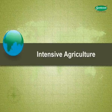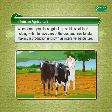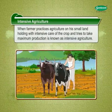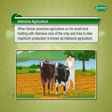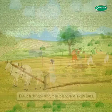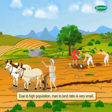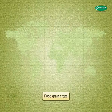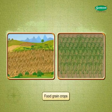Intensive Agriculture: When a farmer practices agriculture on his small land holding with intensive care of the crop and tries to take maximum production, it is known as intensive agriculture. Due to high population, man-to-land ratio is very small. Generally, a farmer practices food grain crops to meet the family requirement, and it is an intense need to take care of the crop.